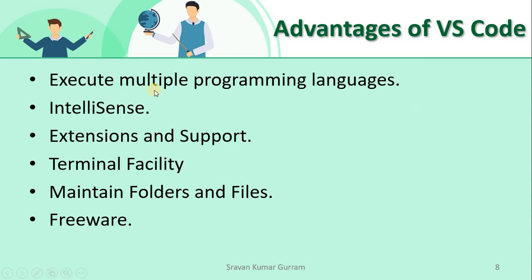We can execute multiple programming languages with the help of VS Code — this is a very powerful feature. Generally, if you want to execute a language, you use a specific IDE. But with VS Code, we can execute multiple programming languages like C, C++, Java, Python, and many more. IntelliSense: whenever you are typing something, it gives you suggestions. For example, when you type 'pri', it suggests 'print'. It anticipates what you want to type, so with the help of IntelliSense it takes minimal time to write the code.